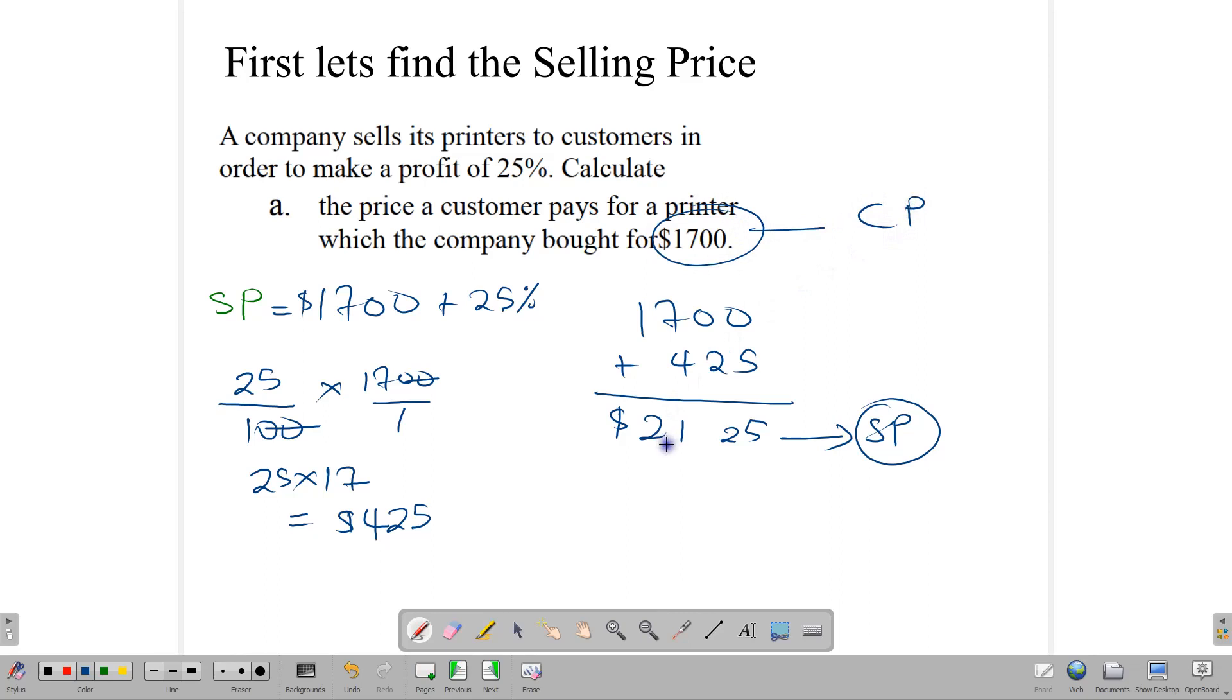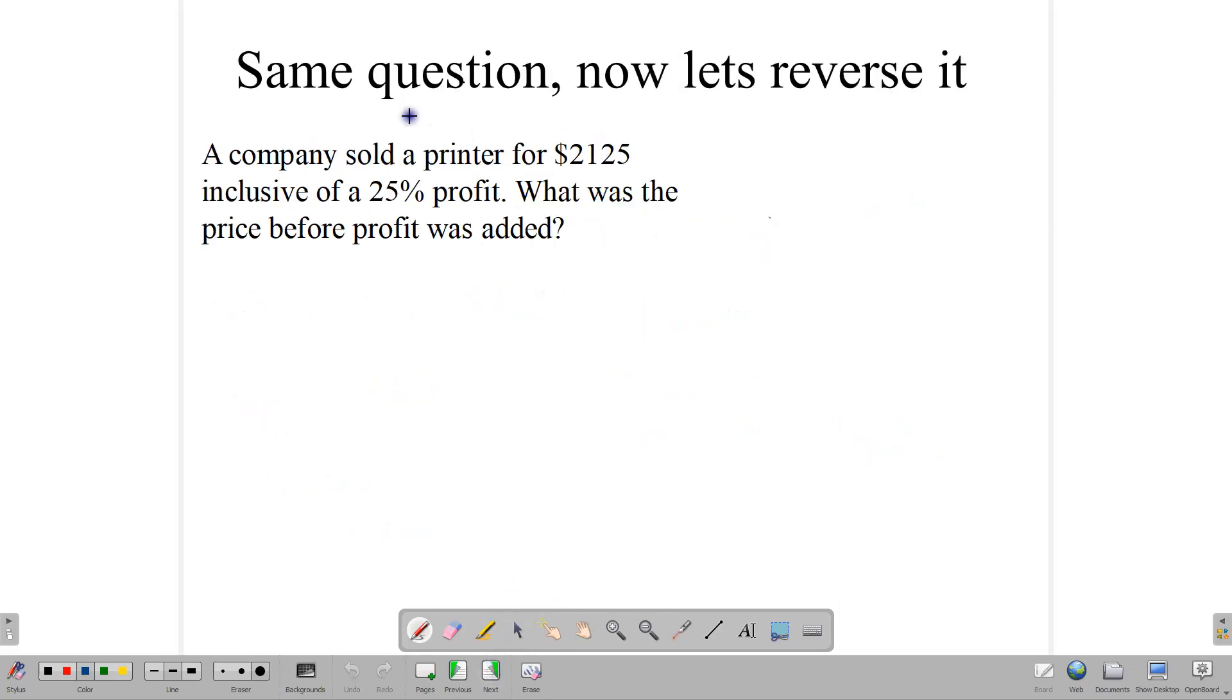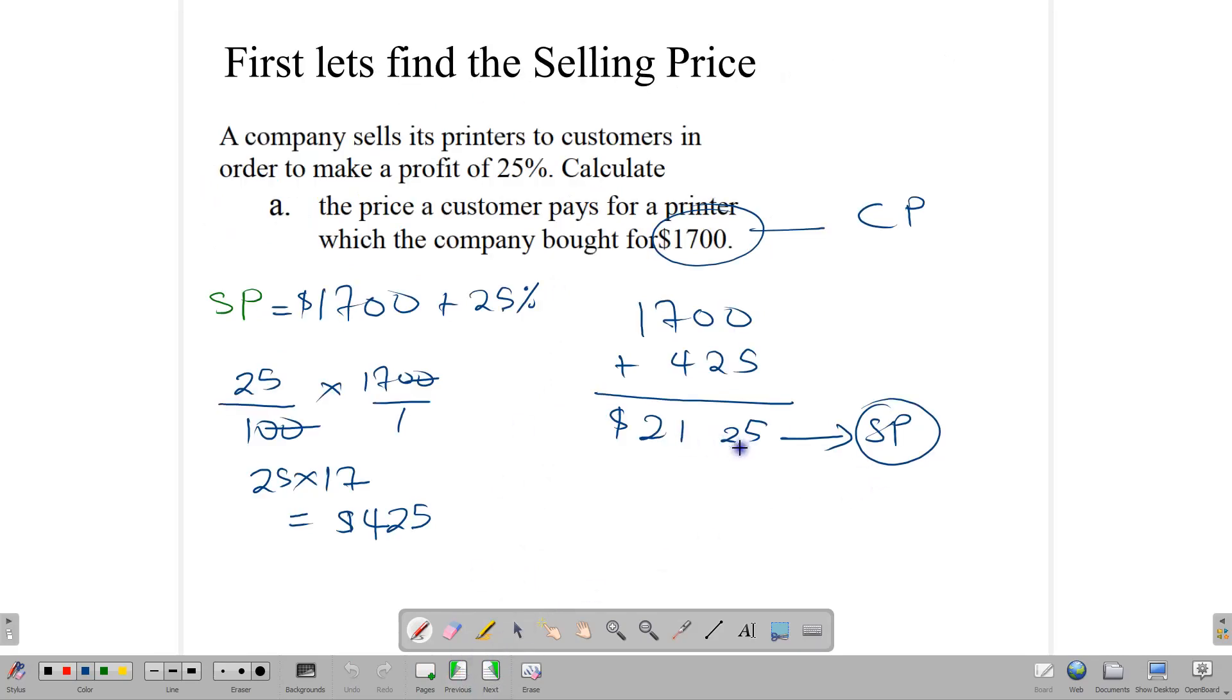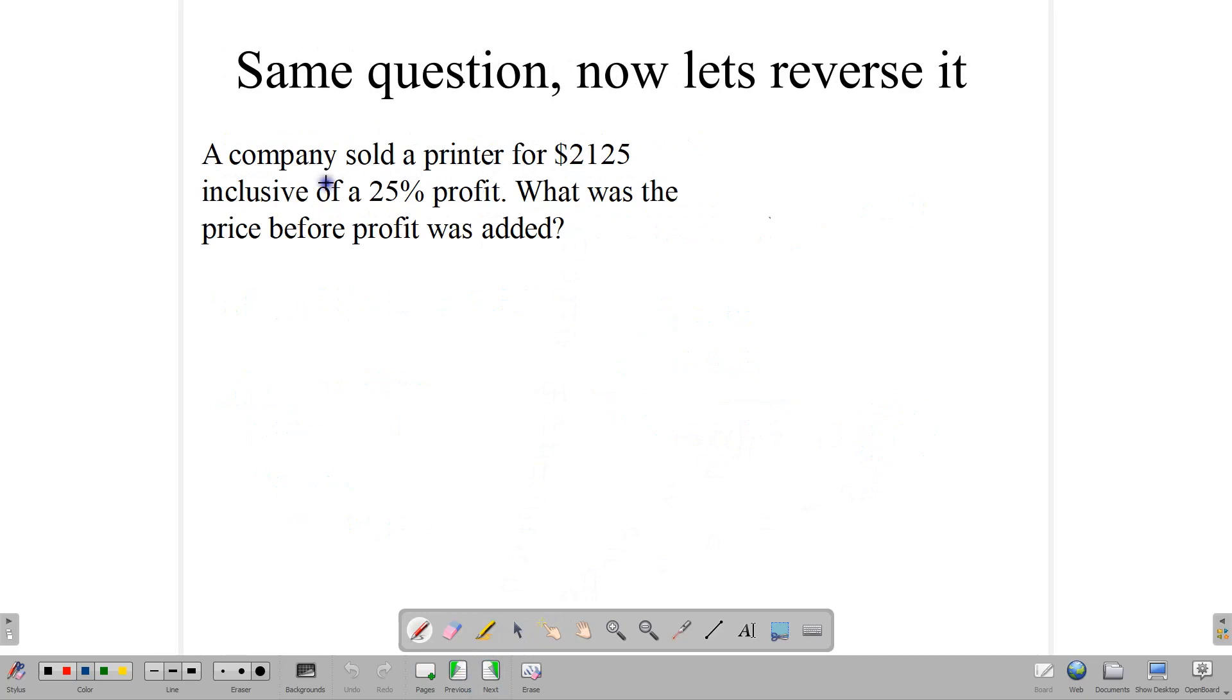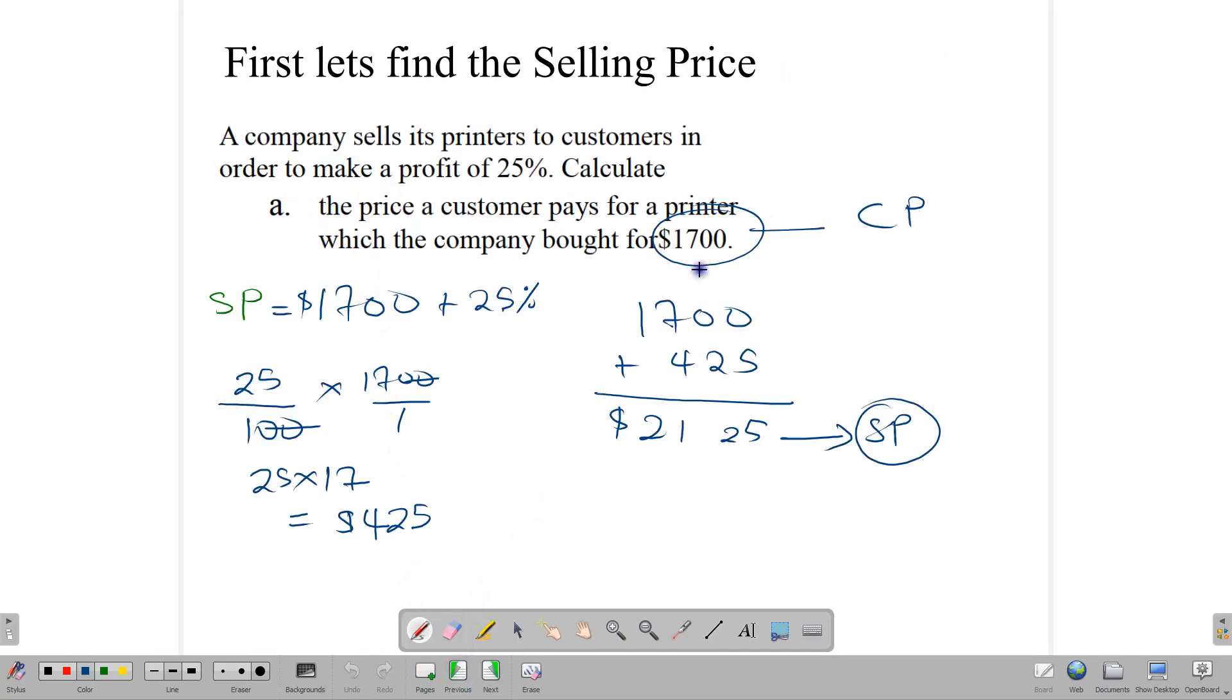Now let's look at the same question, but in reverse. So a company sold a printer for $2,125, and that is inclusive of 25% profit. What was the price before the profit was added? So the price before the profit was added was $1,700, so we're trying to find this $1,700.